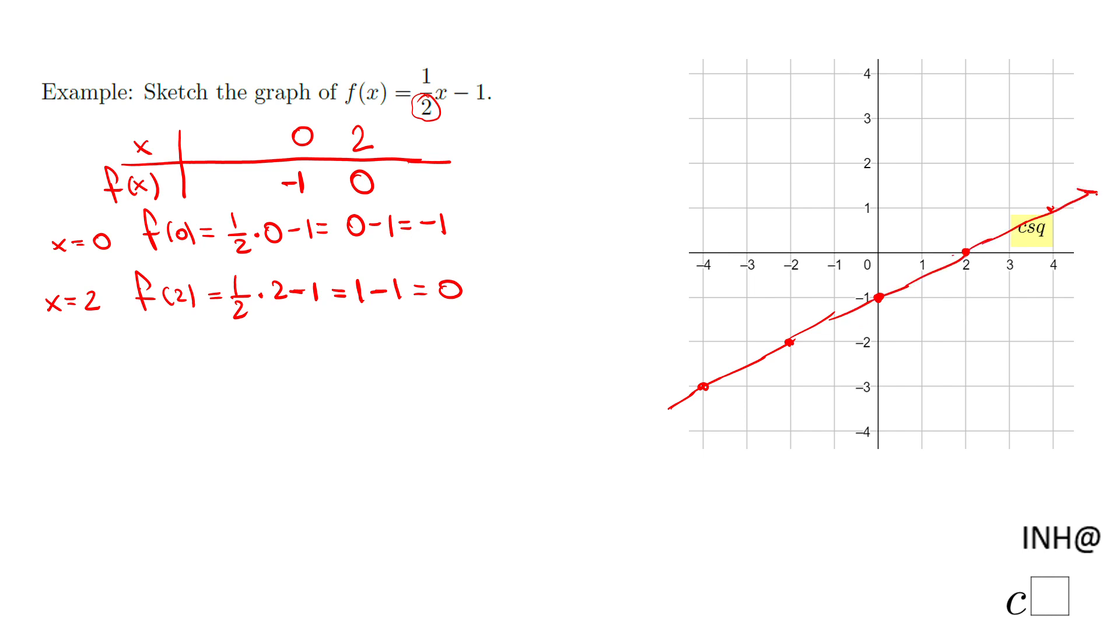two points. You don't need all these points. In fact, on my next thing here, you see what we call the slope-intercept form. Yes, this is y equals, but this f(x) = (1/2)x minus